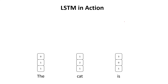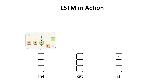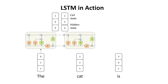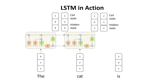Here we can see the LSTM cell in action, applied to the same sequence as in the RNN case, where we have an embedding for each word in the sequence. The mechanism is basically the same with just a little difference. You take the first embedding, process it through the Long Short-Term Memory cell, produce the cell state and the hidden state, then pass them to the next step along with the embedding of the second word to produce a new cell state and a new hidden state.